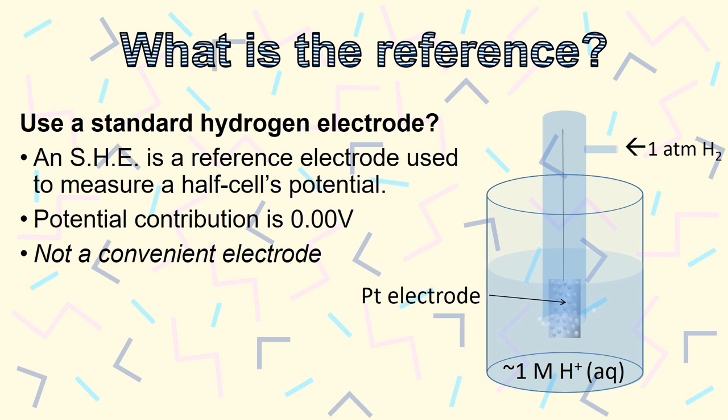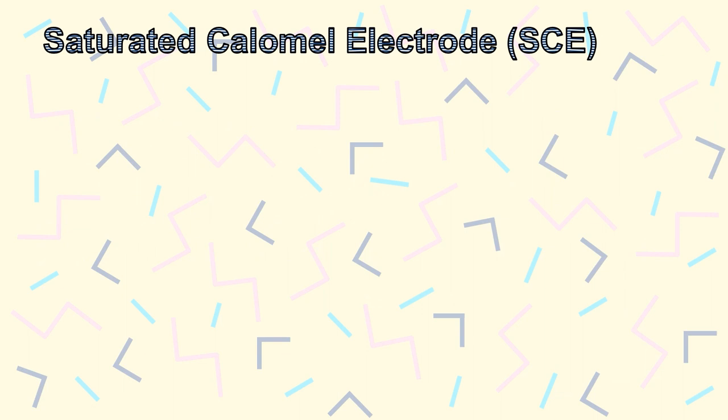Fortunately, there are alternatives. One alternative is the saturated calomel electrode, and here's the half-reaction associated with it.